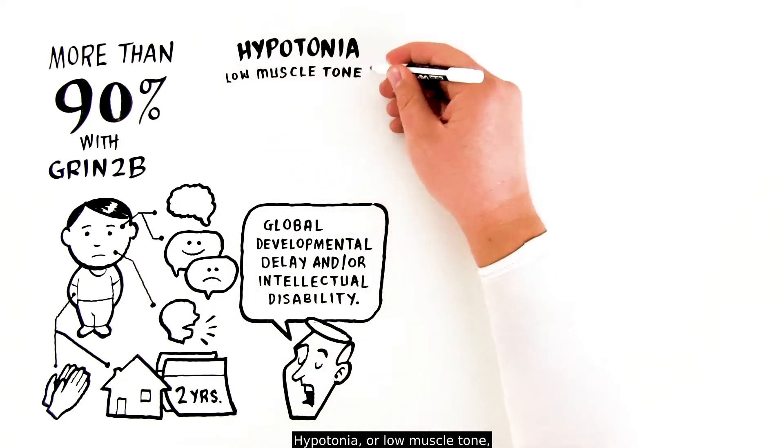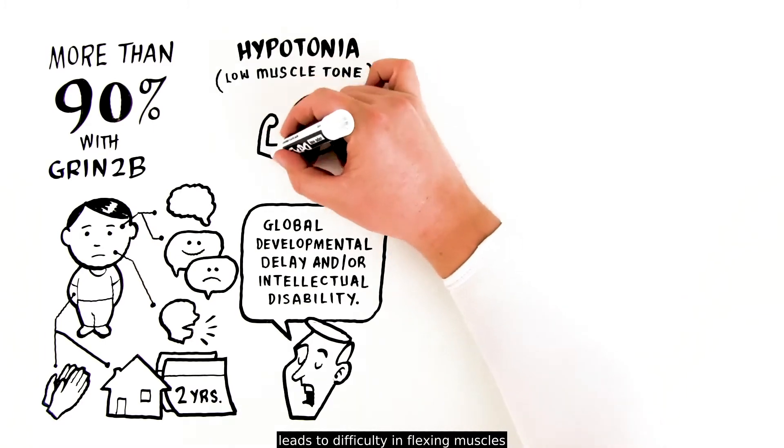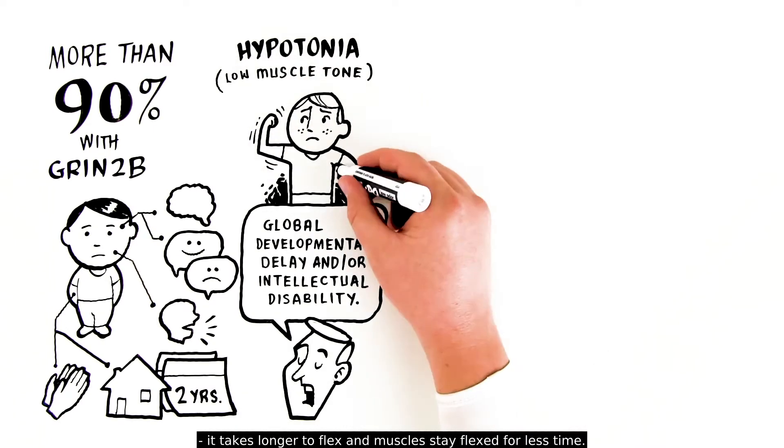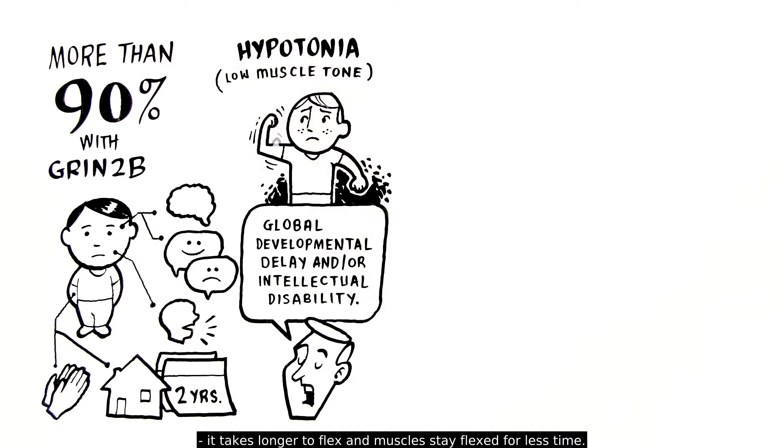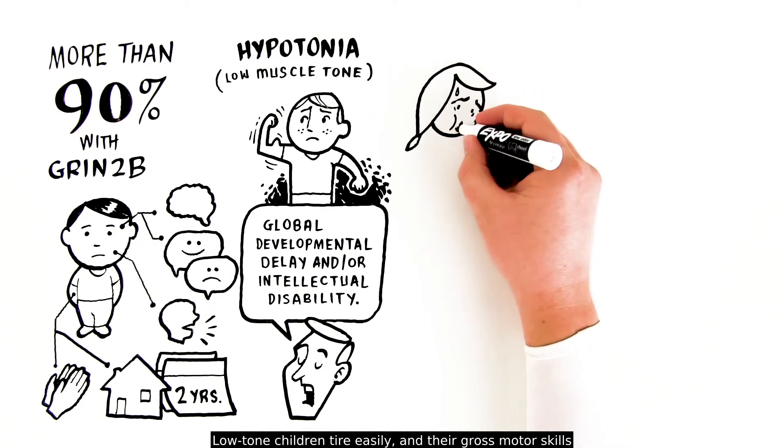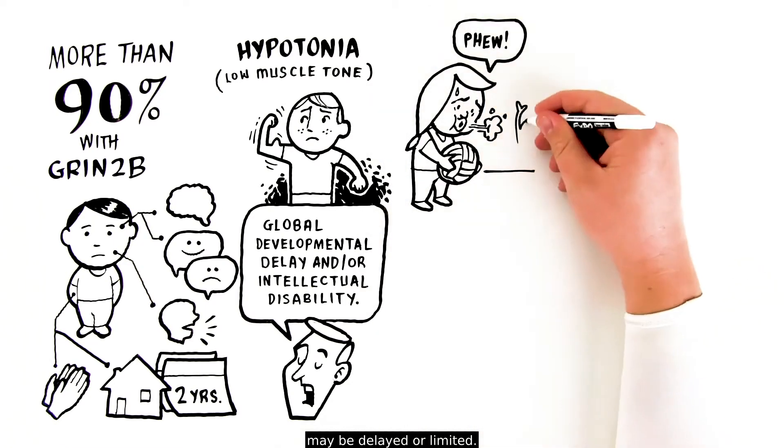Hypotonia, or low muscle tone, leads to difficulty in flexing muscles. It takes longer to flex and muscles stay flexed for less time. Low tone children tire easily and their gross motor skills may be delayed or limited.